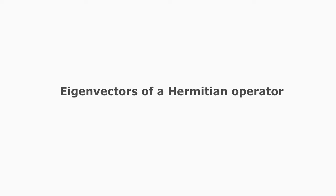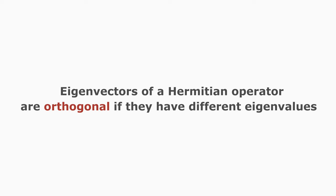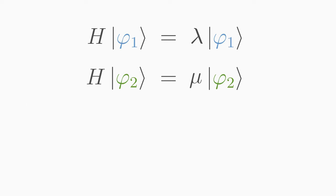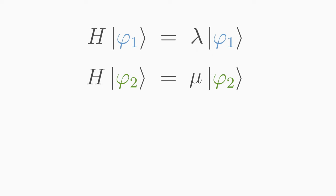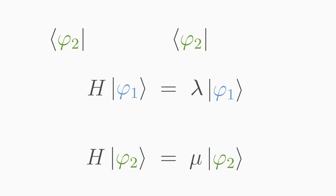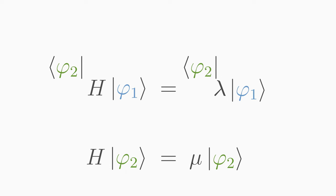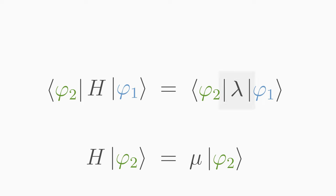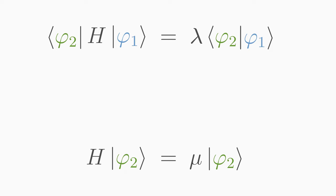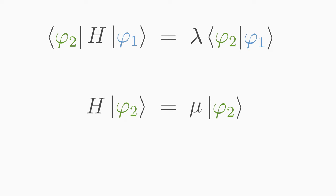Property number two: eigenvectors of a Hermitian operator are orthogonal, if they have different eigenvalues. Let's prove this quickly. We take two eigenvalue equations for the Hermitian operator H. Phi one and phi two are two different eigenvectors of H, and lambda and mu are the corresponding eigenvalues. Let's apply the bra-vector phi two from the left to the first eigenvalue equation. The eigenvalue lambda is a real number which we can place in front of the scalar product. We express the second eigenvalue equation with the bra-vector by flipping the two kets.